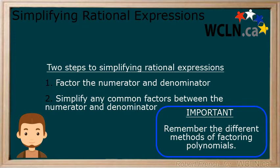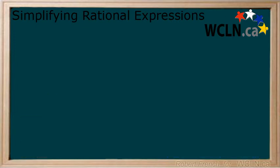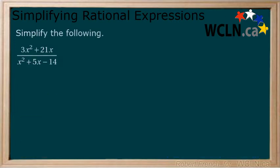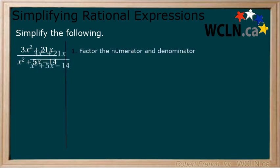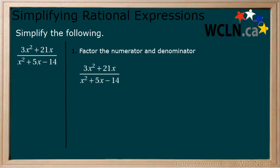Now let's consider some examples. Simplify the following rational expression. Step 1: Factor both the numerator and the denominator. This is where it is really important to be comfortable and confident on how to factor polynomials. In the numerator, we can factor out a 3x to get 3x multiplying x plus 7.